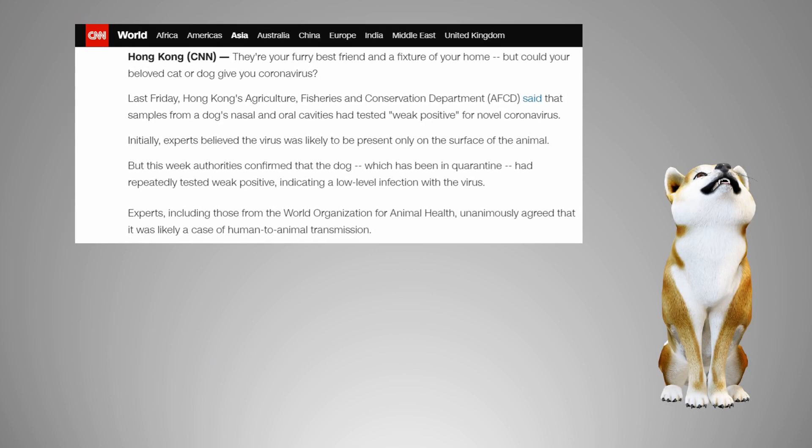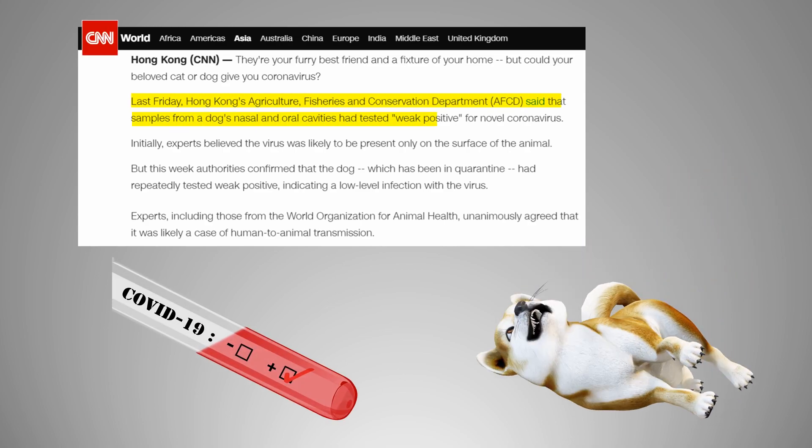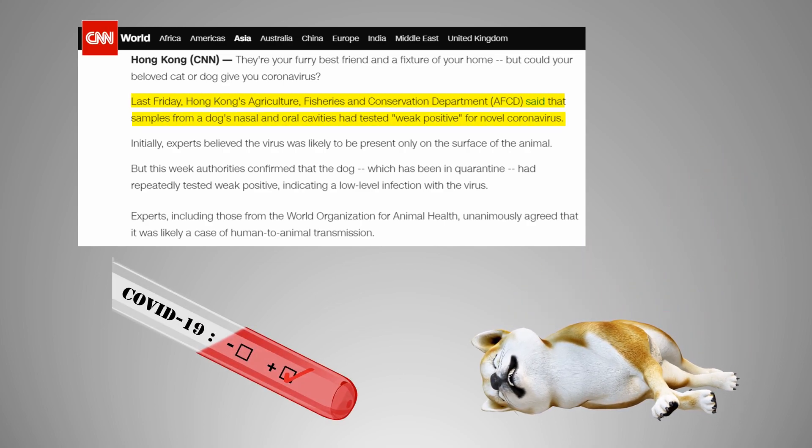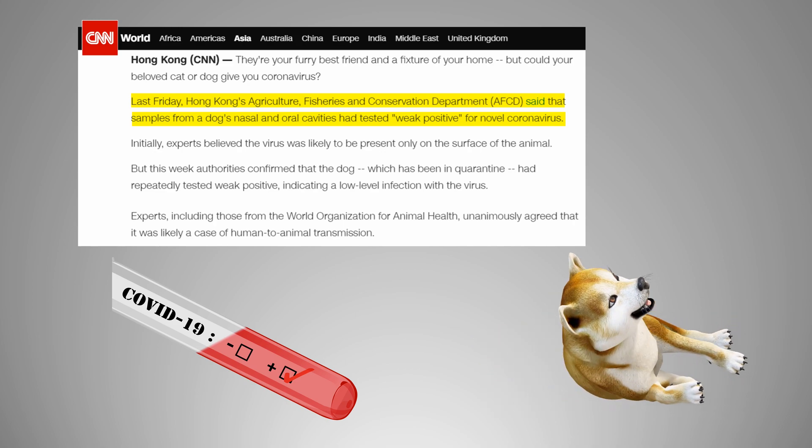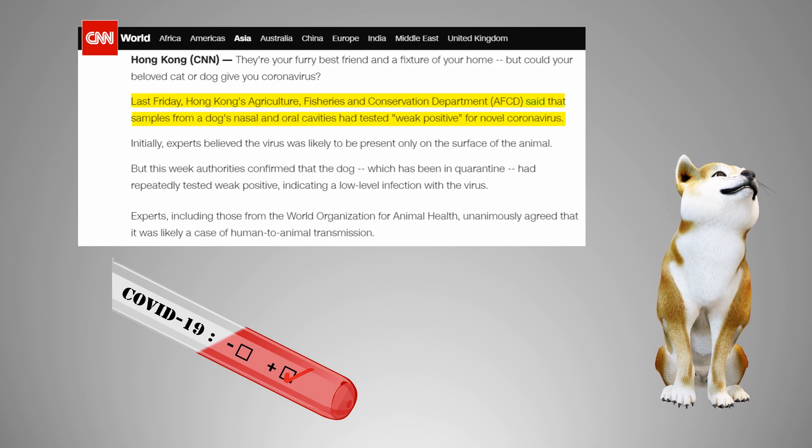CNN has recently reported that samples from a 17-year-old Pomeranian dog's nasal and oral cavity were tested positive for the novel coronavirus. This case emerged in Hong Kong, where the 60-year-old owner of the dog was also tested positive for SARS-CoV-2.